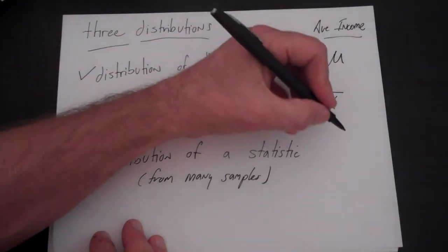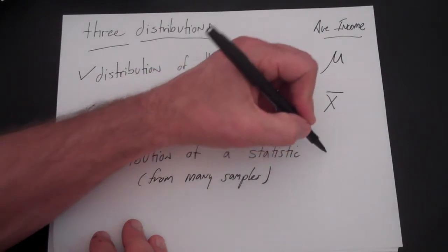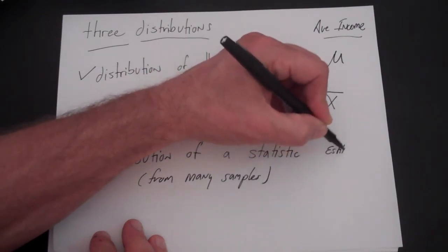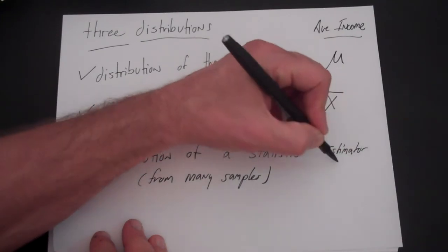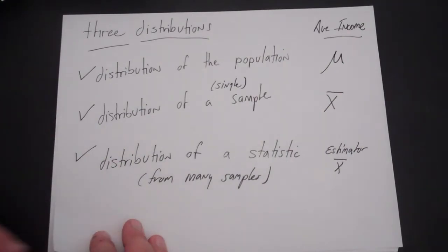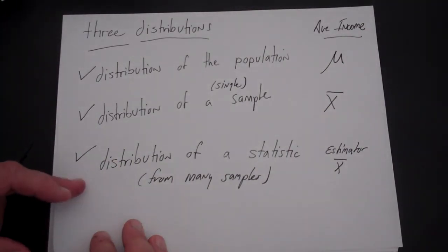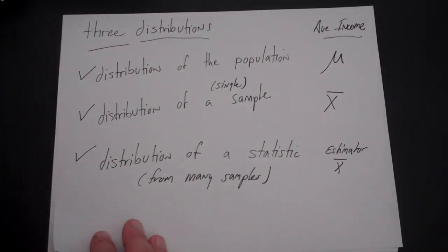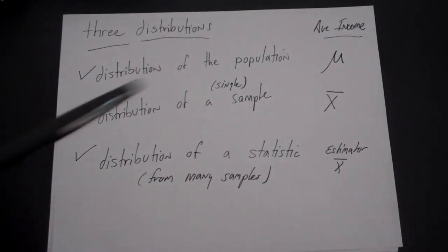But there's also an estimator x bar which has properties. The properties would be: on average, if you took a sample, what would you expect to get on average, and how close on average would you be to the average of all samples if you took them. This finishes the second video. In the third video, we talk about properties of estimators.